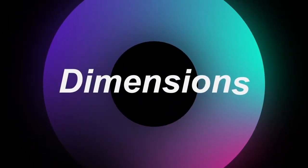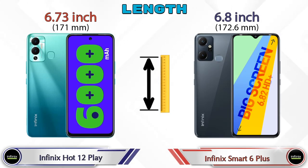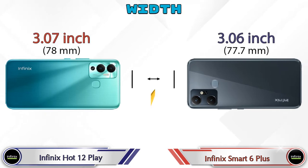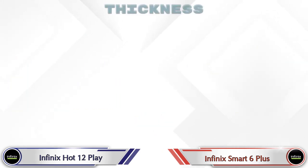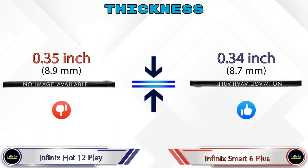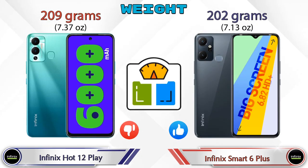Now let's check the details about dimensions. For length, Hot 12 Play is 6.73 inches and Smart 6 Plus is 6.8 inches. Width: Hot 12 Play is 3.07 inches and Smart 6 Plus is 3.06 inches, which are almost the same. For thickness, Hot 12 Play is 0.35 inches and Smart 6 Plus is 0.34 inches. For weight, Hot 12 Play is 209 grams and Smart 6 Plus is 202 grams.